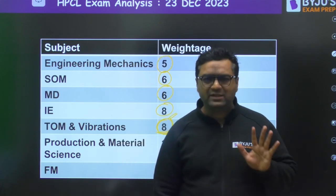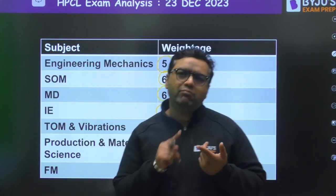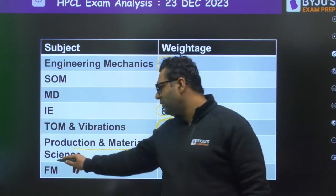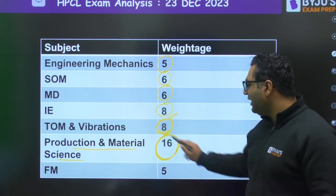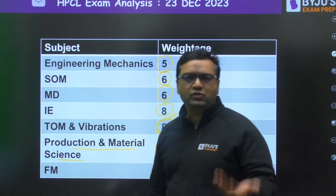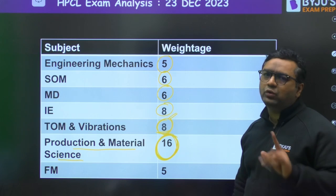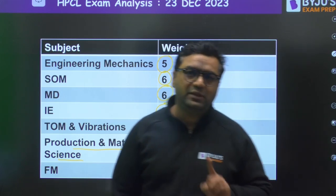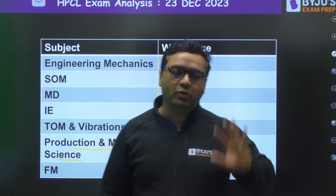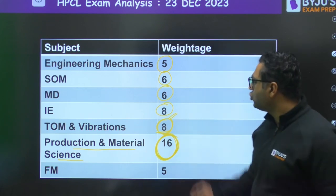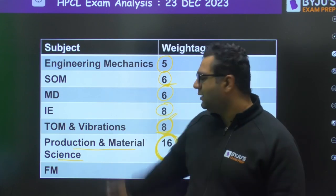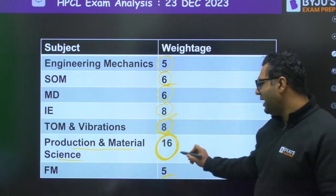When I gave you my top five important subjects, number one on my list was Production, and you can see in the paper it is also number one. Production and Material Science has a weightage of 16 questions out of 85 — that is around 20 percent. I had expected this. Second was Thermal Sciences, third was Theory of Machines and Vibration, then SOME and FM, which had lesser weightage than expected.